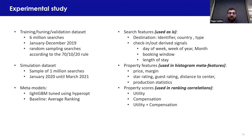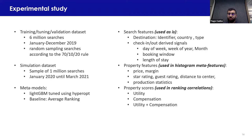For the experimental study, we used six million searches from 2019 and performed simulations on a set of one million searches. We used LightGBM tuned with Hyperopt. We selected only one algorithm to show — although we tested several — because the interesting part is how to generate the meta examples and use them. The baseline is the average ranking, which uses no features. Features we use include search features such as destination country and day of the week, and property features like price and star rating aggregated through histogram features, with property scores aggregated through ranking correlations.